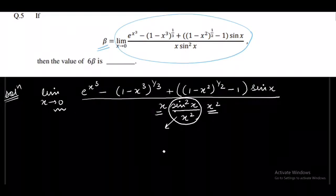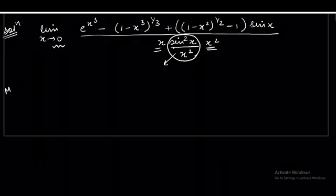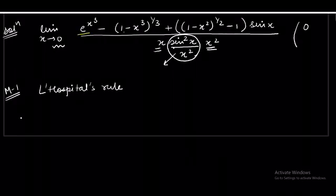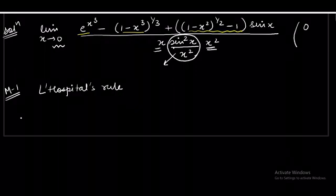Starting with the very first method: L'Hôpital's rule. This is most students' favourite method, but after completing this question you will see why we should not blindly apply L'Hôpital every time. First we check the form of the limit. When x tends to 0, the numerator turns out to be 0: the first term becomes 1, the second becomes 1, they cancel each other, and the third term is 0. The denominator x³ also goes to 0, so we have a 0/0 form, meaning L'Hôpital is applicable.